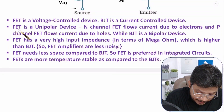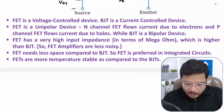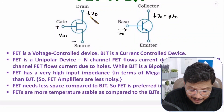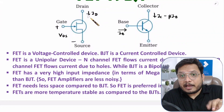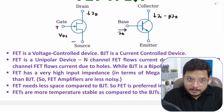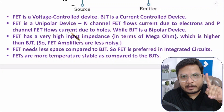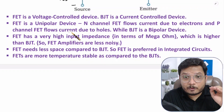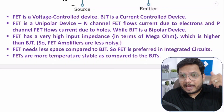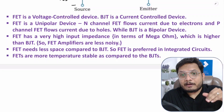With FET, it is unipolar because current flows due to majority carriers only. In an N-channel FET, the drain current ID flows due to electrons only. If you have a P-channel FET, current flows due to holes only. So FET is unipolar — in N-channel, current flows due to electrons; in P-channel, due to holes. In BJT, majority and minority both contribute: in NPN, majority is electrons and minority is holes; in PNP, majority is holes and minority is electrons.